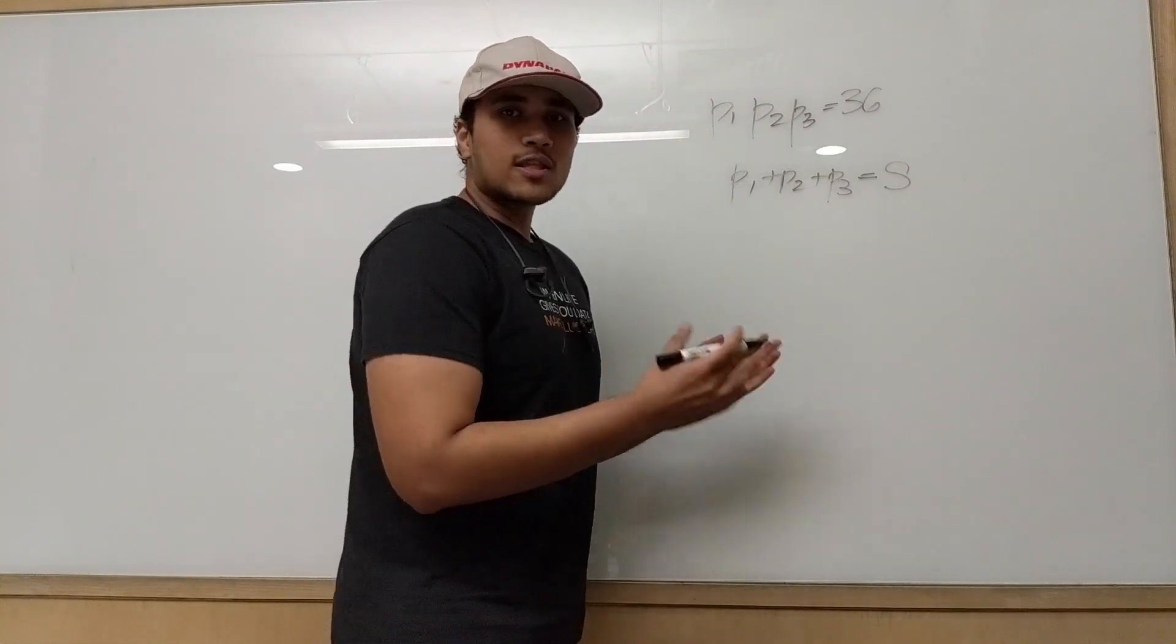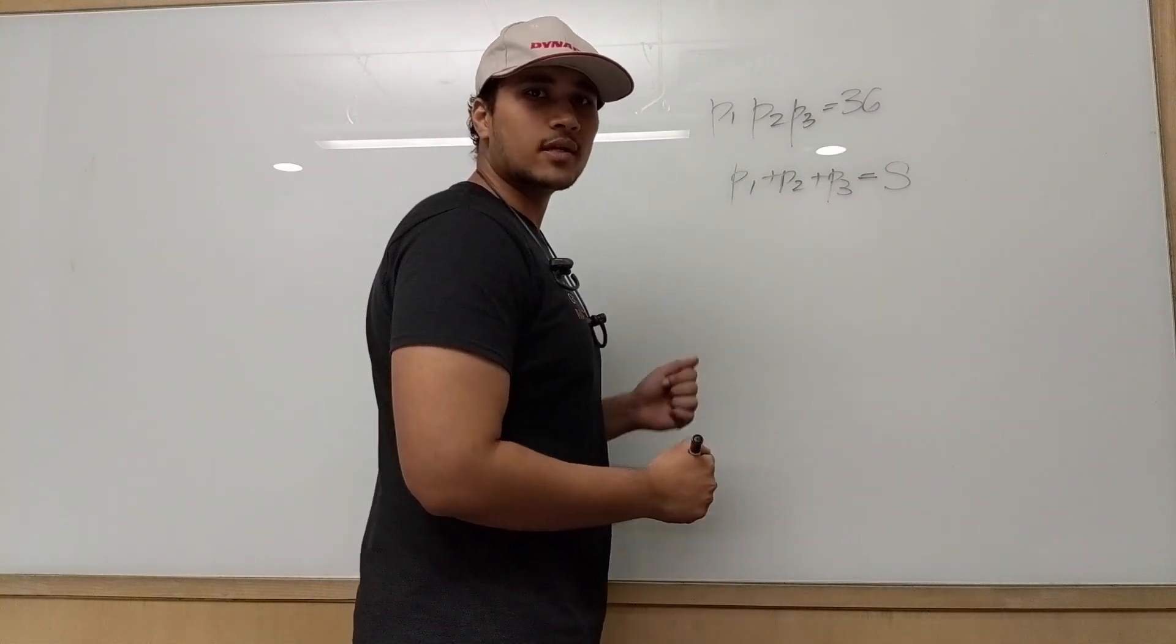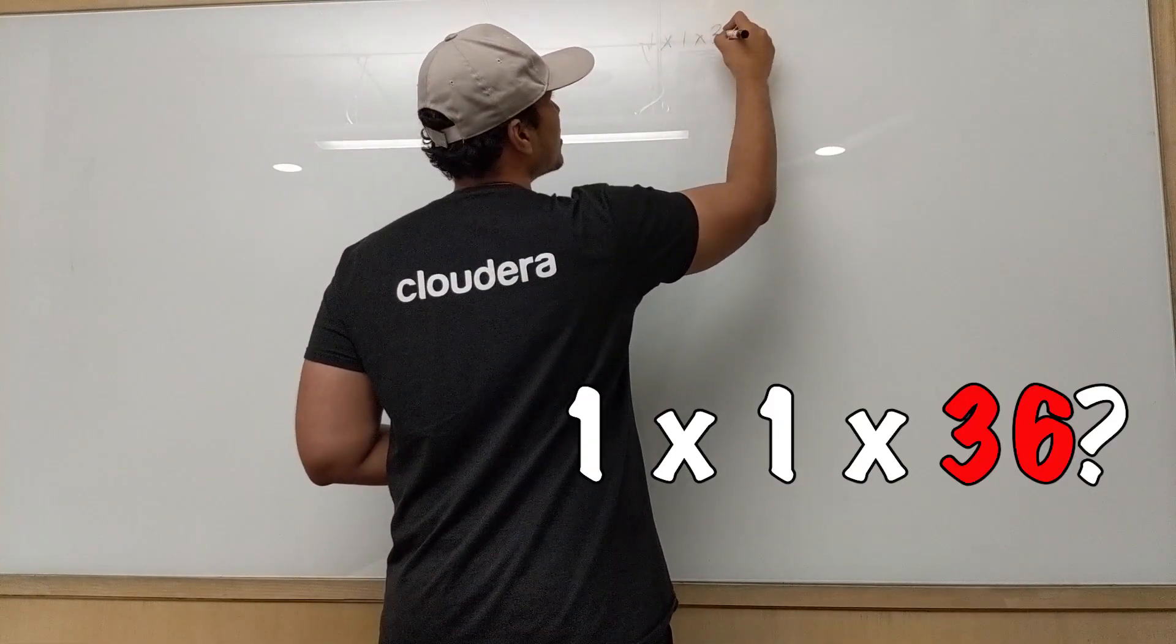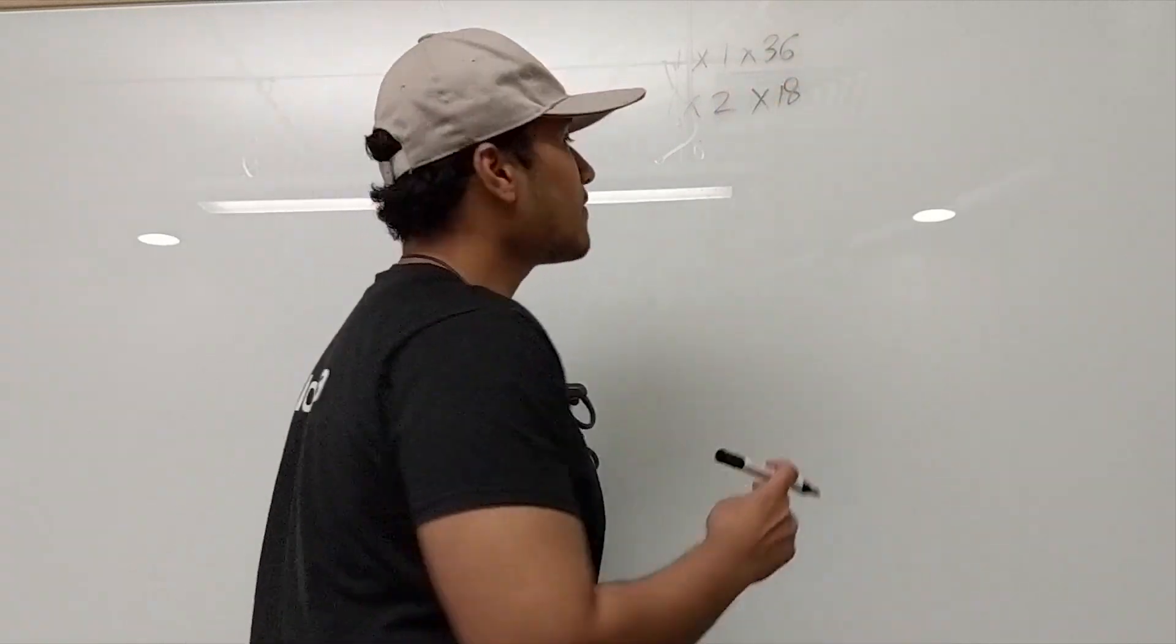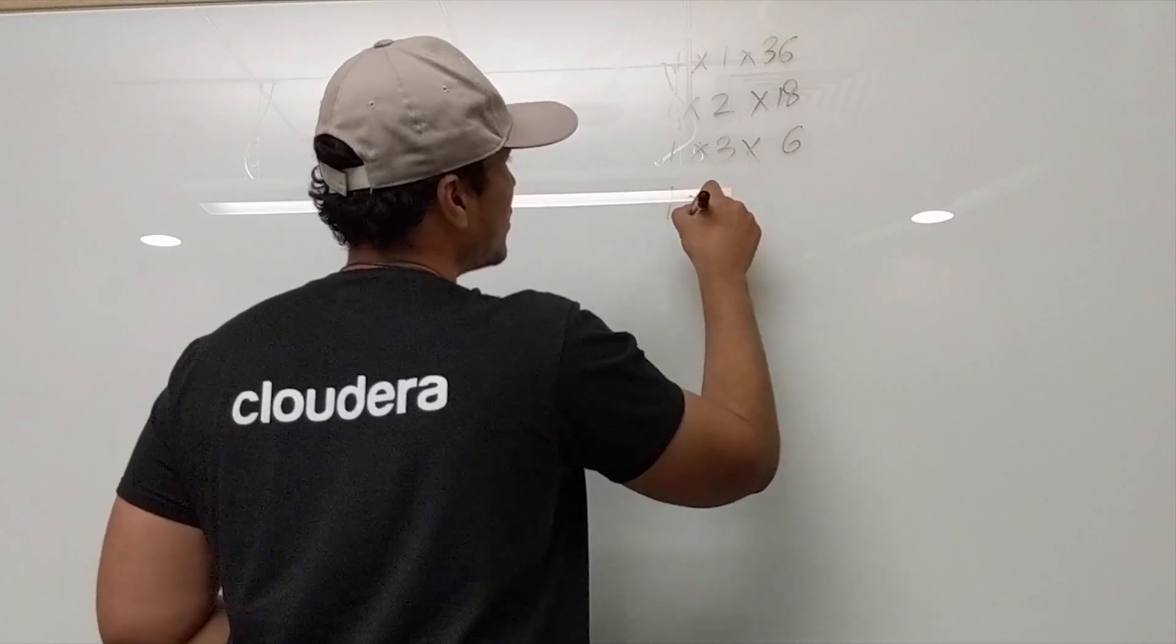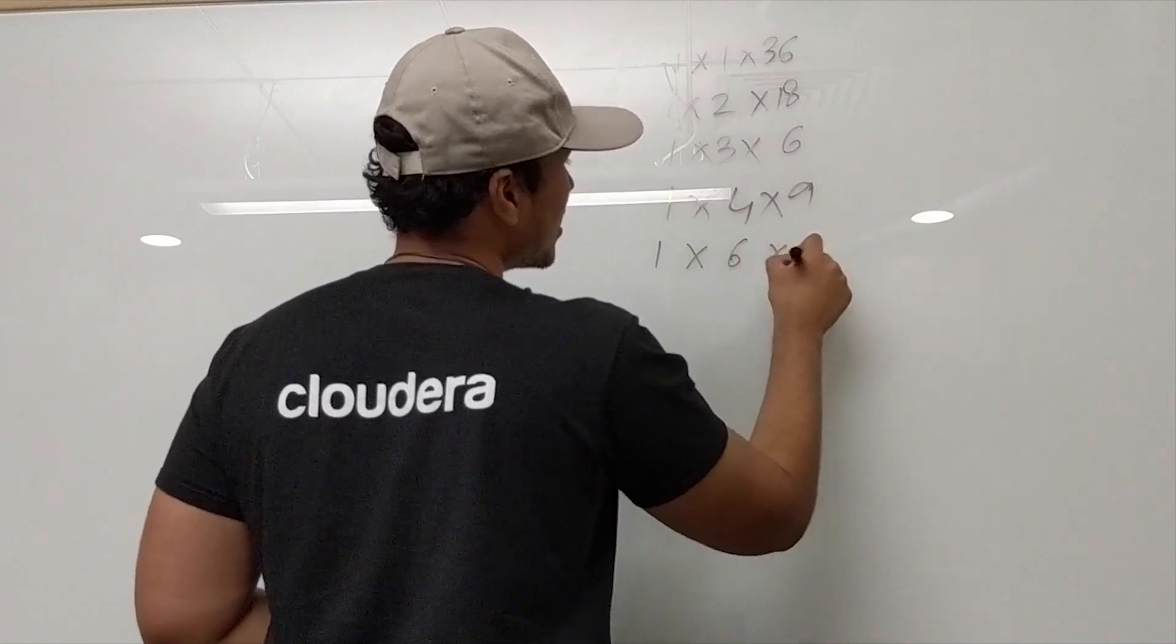So I will write all the possible ages that his cousins can have, which form a set of triplets. So let's iterate on those triplets. So one of the possible is 1 into 1 into 36. Another is 1 into 2 into 18. Then we can have something like 1 into 3 into 6. Then 1 into 4 into 9. Then 1 into 6 into 6.